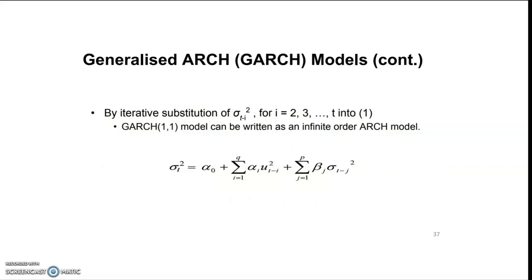By iterative substitution of σ²t₋ᵢ for i = 2, 3, ..., t, the GARCH(1,1) model could be written as an infinite order ARCH model.